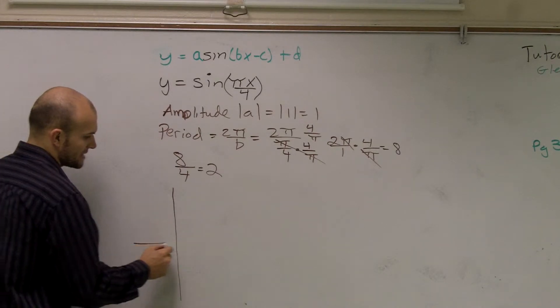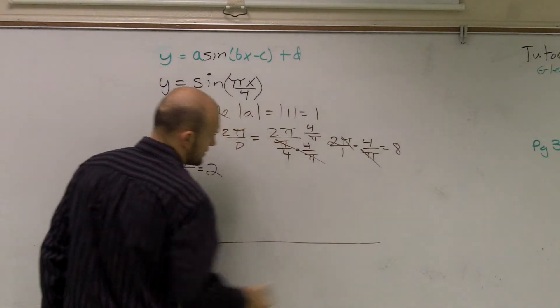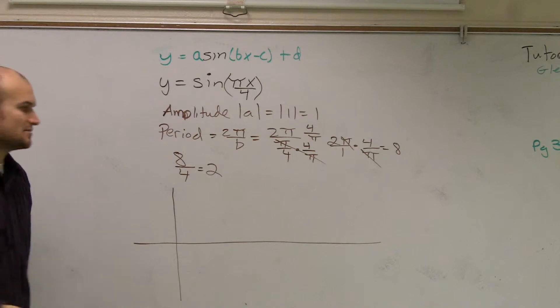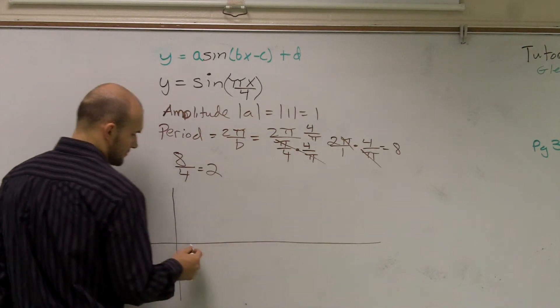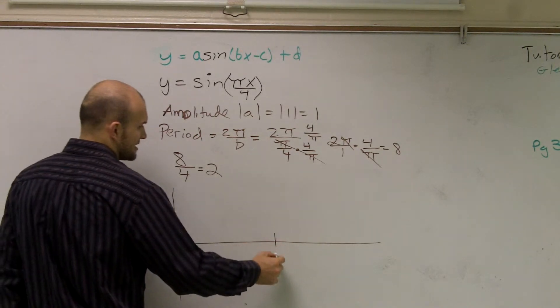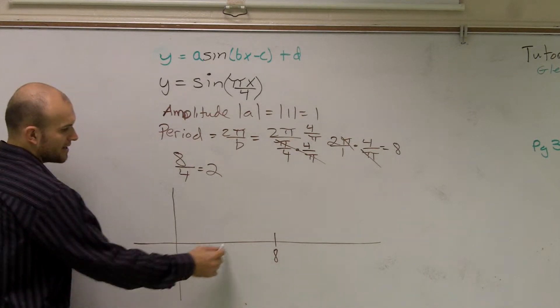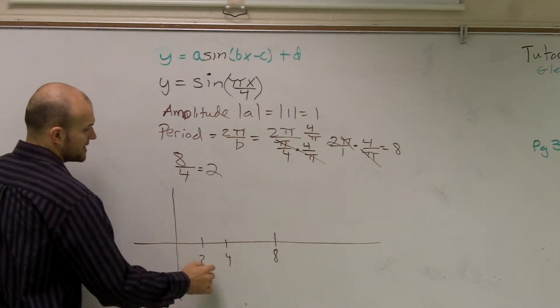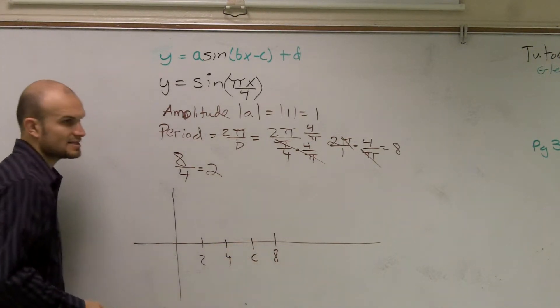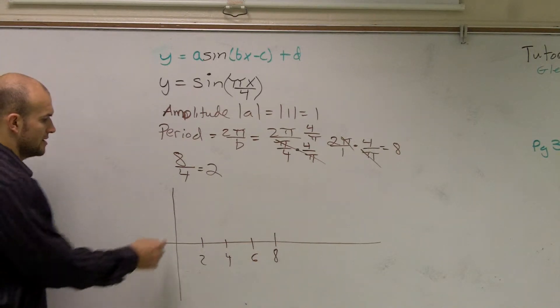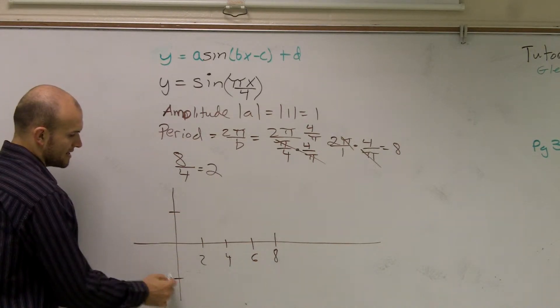So let's go and graph an x and y axis. And 8's pretty easy. We can just say, all right, well, let's just go out to 8. Let's say this is 8. Then this would be 4. That's 2. And that's 6. Right? Let's say I go, that's 1 and that's negative 1.